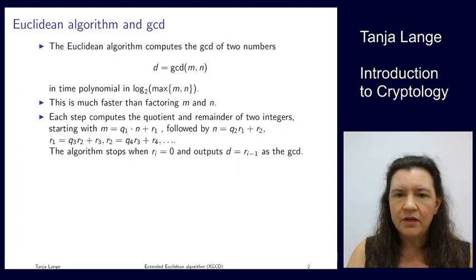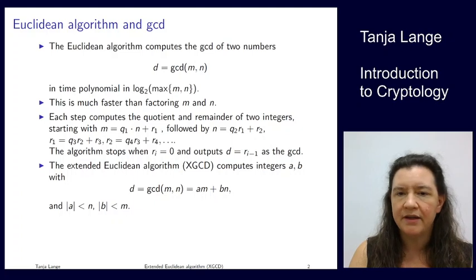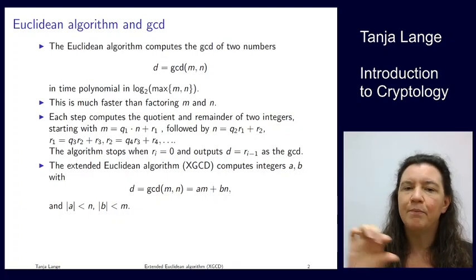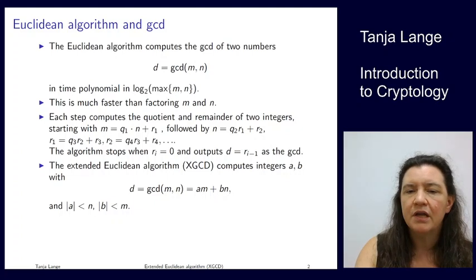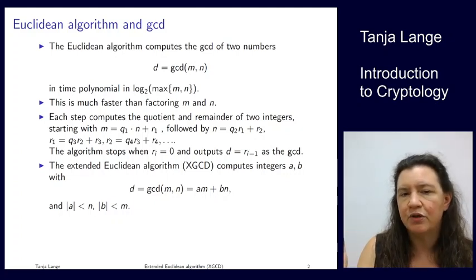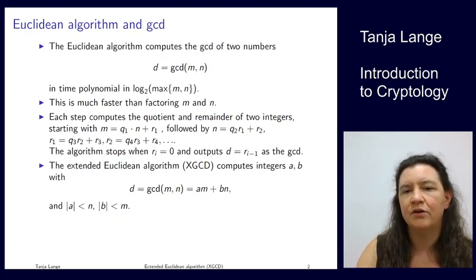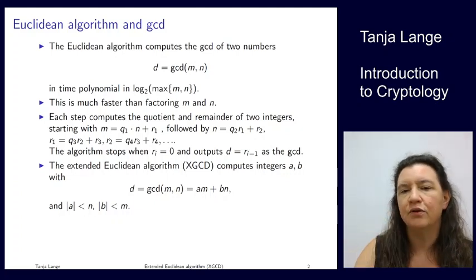The extended Euclidean algorithm does compute a little bit more. It also outputs two other integers, a and b, so that the following linear equation is holding. So this GCD, d, is equal to a m plus b n. And we're getting a bound on those two numbers. Now one of these two is to be negative. So we're talking about the absolute values of those. And the coefficient in front of the m, the a is smaller in absolute value than the n, and the coefficient in front of the n is smaller in absolute value than the m.